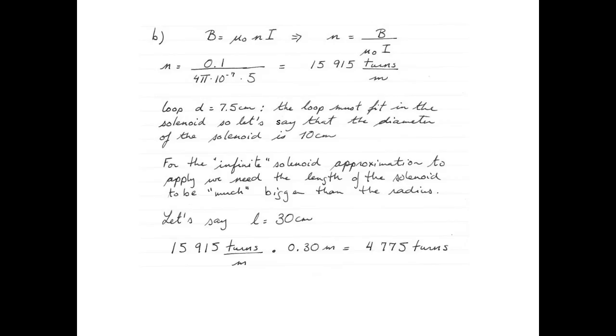15,915 turns per meter multiplied by a length of 0.3 meters means that my solenoid has to be made out of 4,775 turns. And those 4,775 turns multiplied by the circumference, so 2 pi r, or 2 pi times 5 centimeters, meters per turn, means that I need a kilometer and a half in order to make that solenoid.